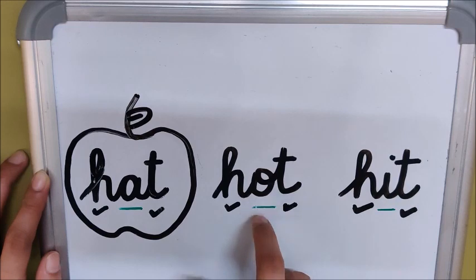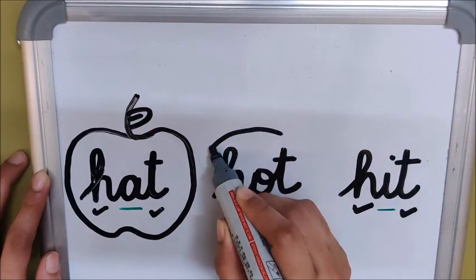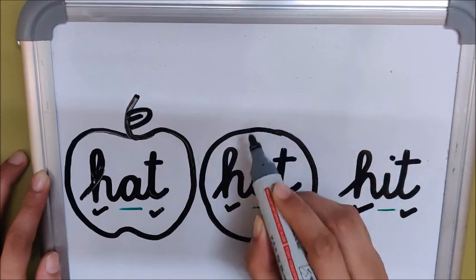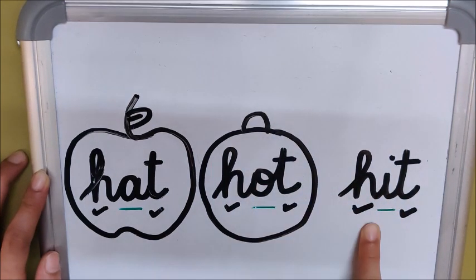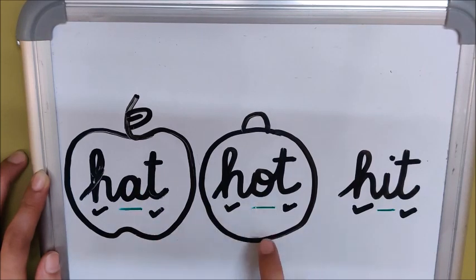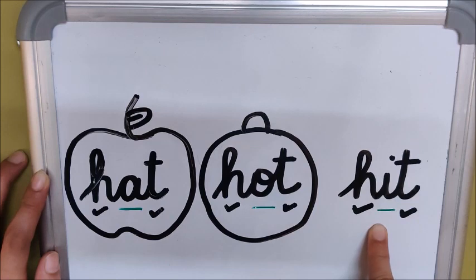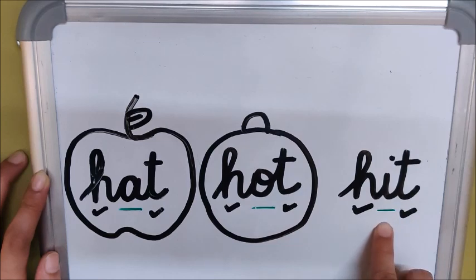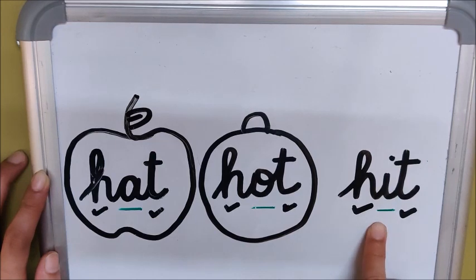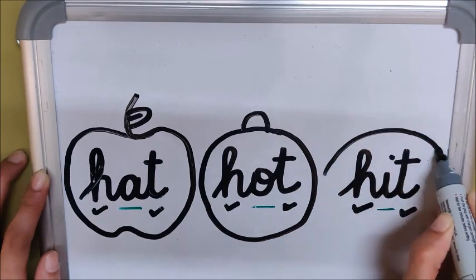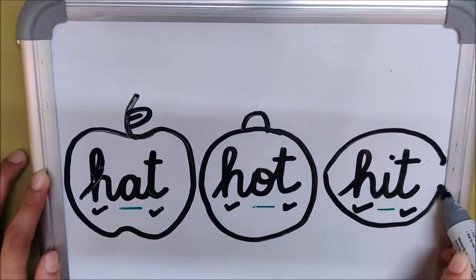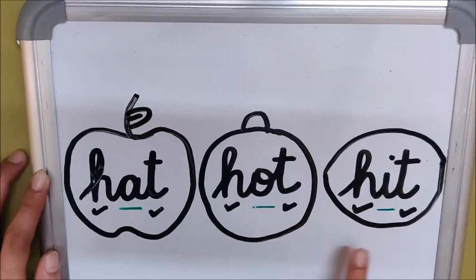It has the middle sound 'oaa', so I am going to draw an orange here because it is an orange word. Now this word, 'hit' — what is the middle sound here? 'I/ee'. A is apple, O is orange. Can you guess what we call this word? Idly word! We call this word an idly word because it has 'ee' as the middle sound, and 'idly' also begins with the 'ee' sound. So this is an idly word. Apple word, orange word, idly word.